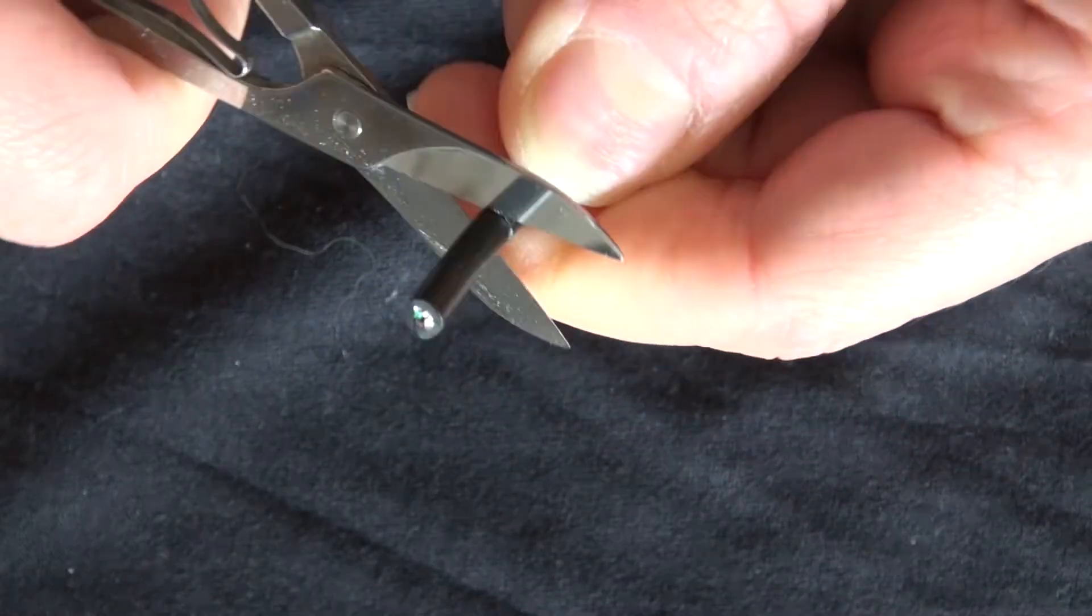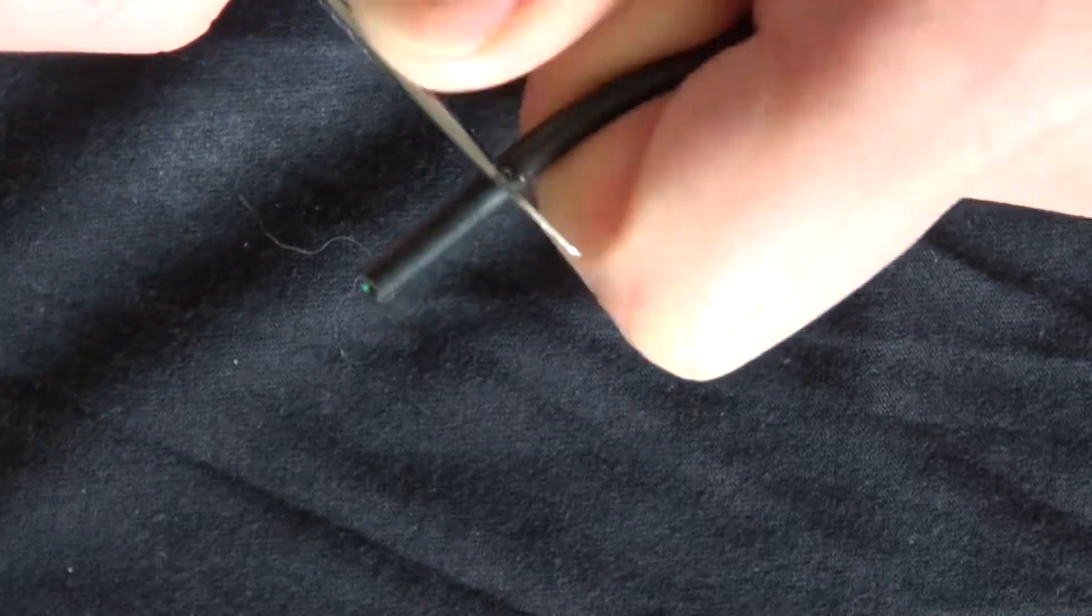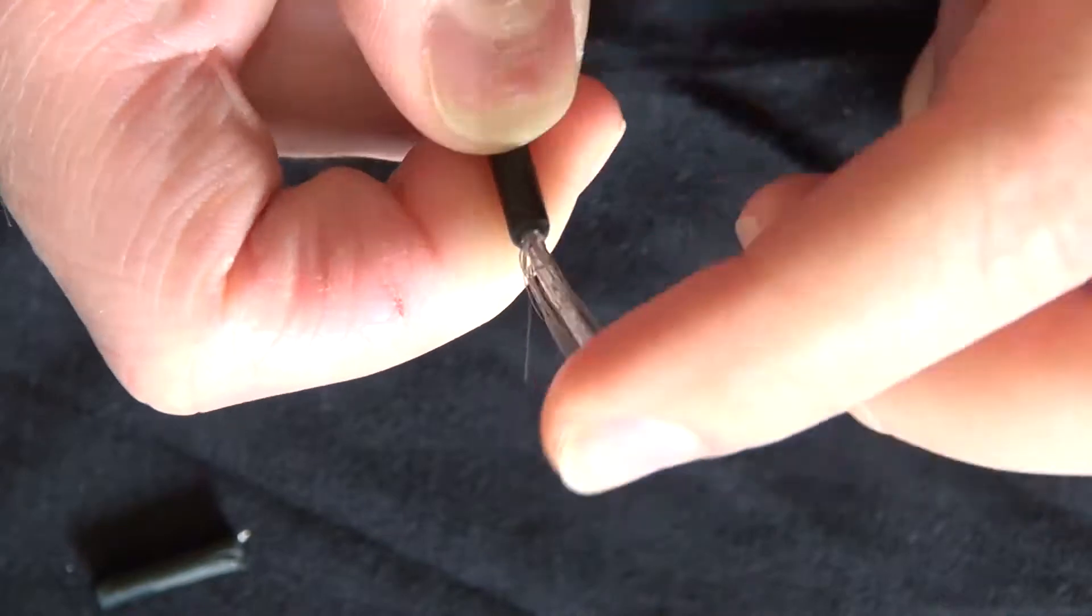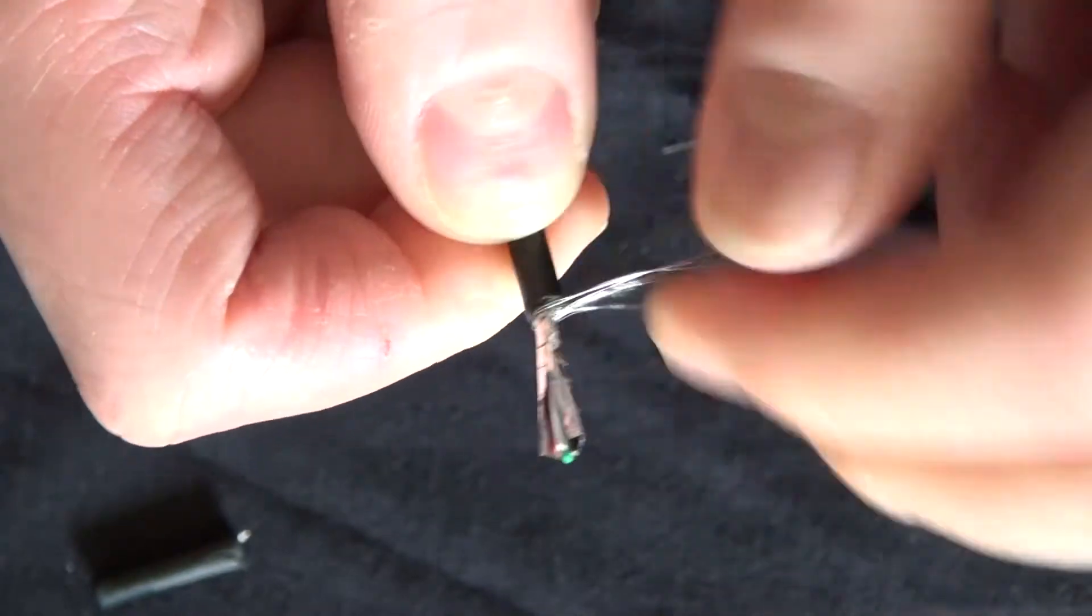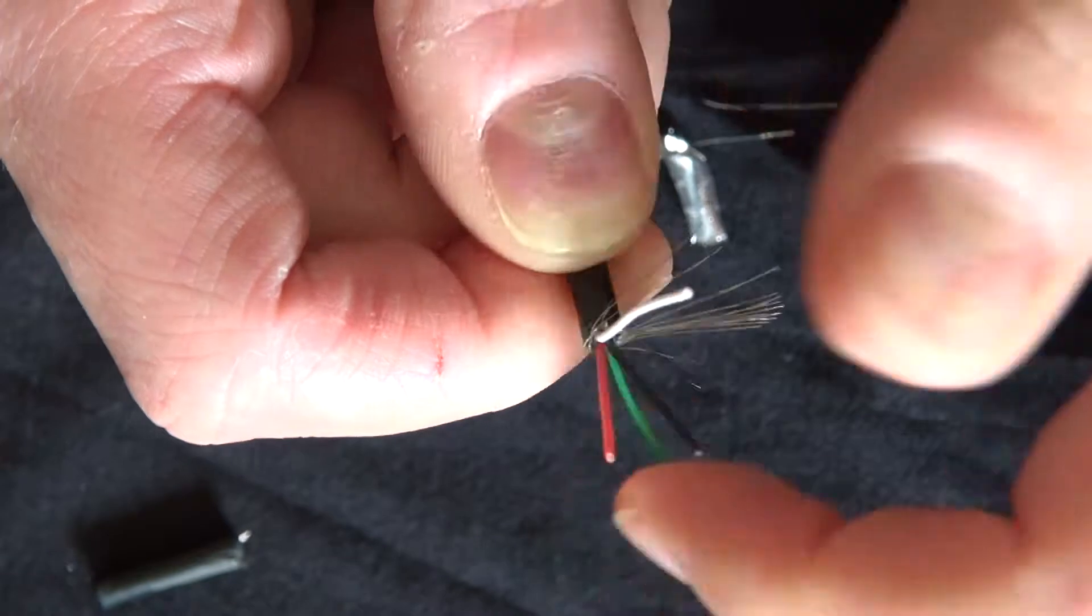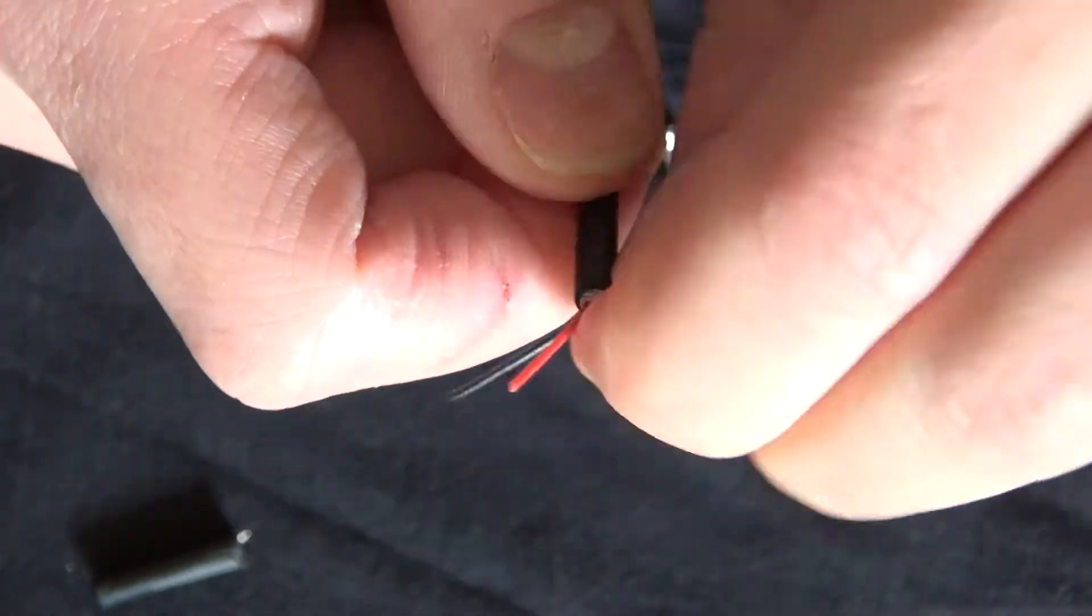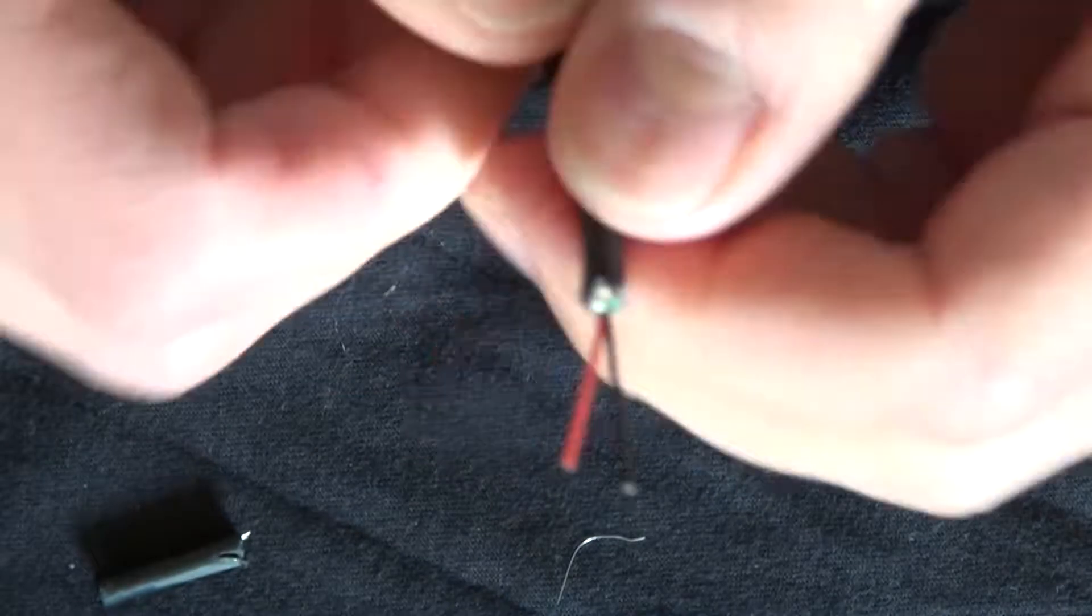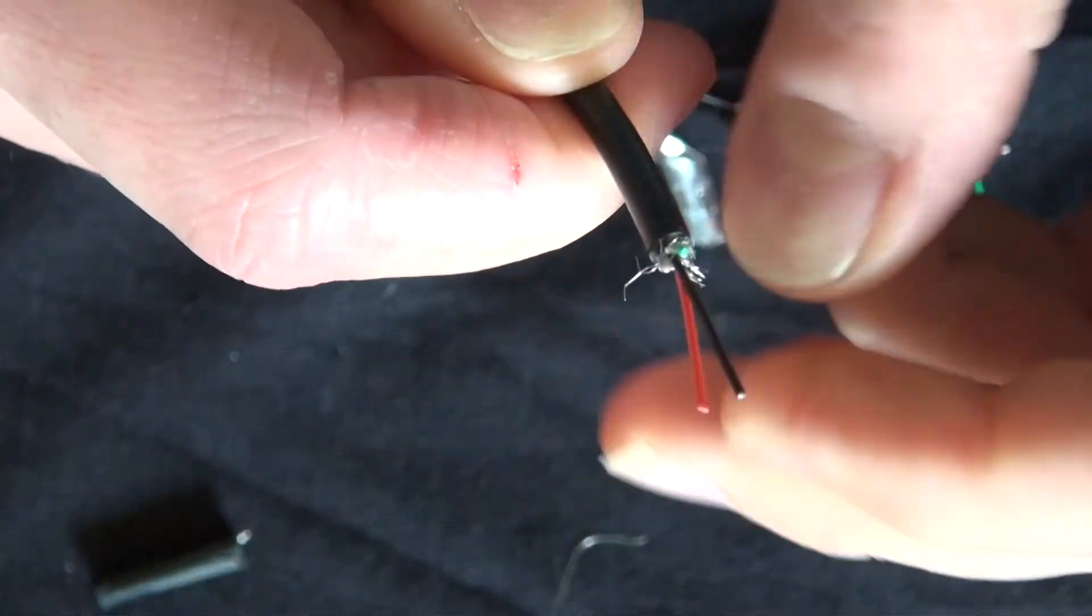First, remove the insulation from the USB cable. Cut off the unnecessary cables, the foil, and the white and green wires. Keep the red and black wires since one is positive and one is negative.